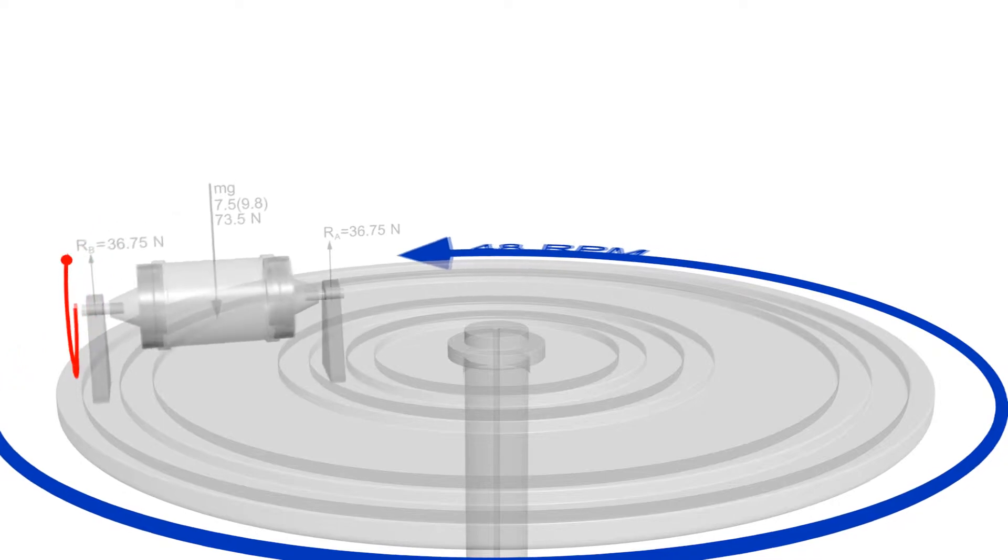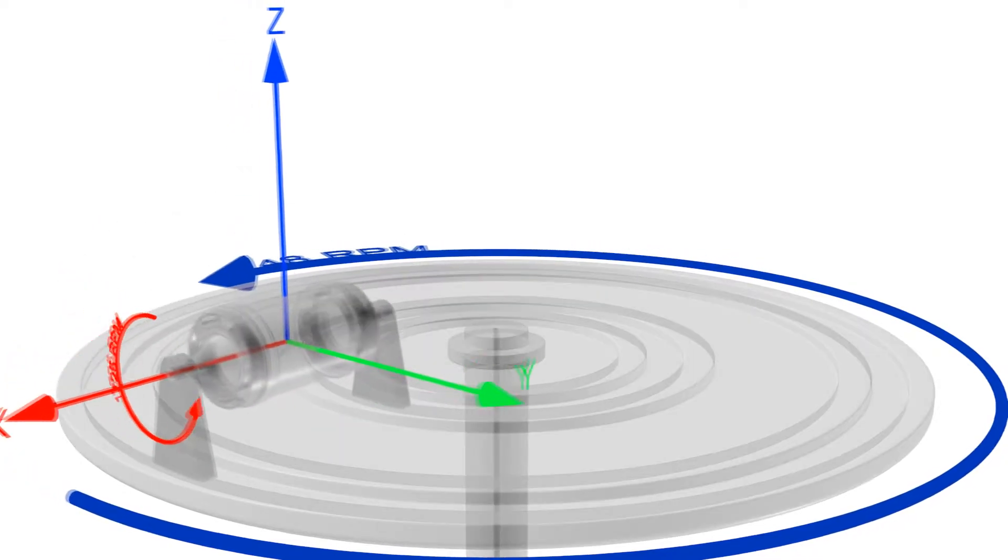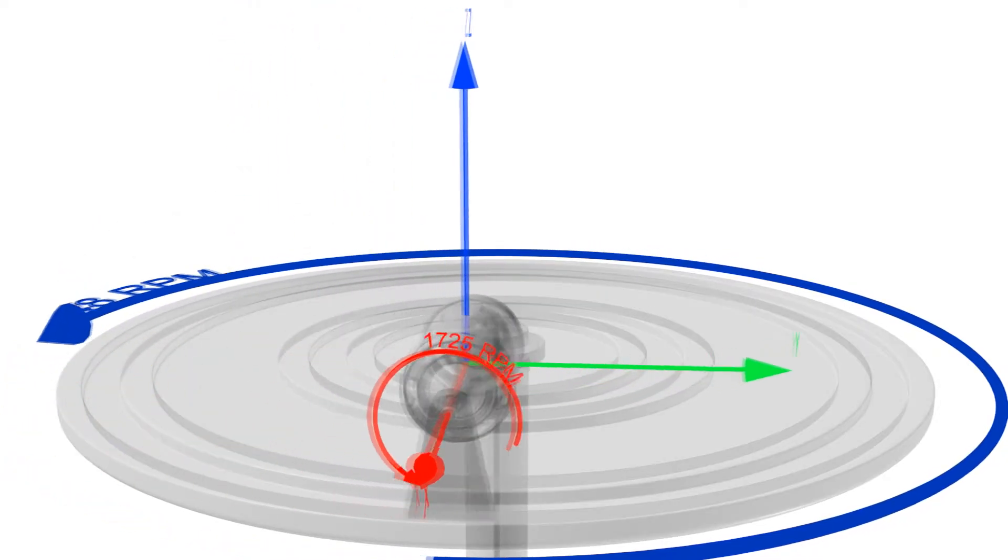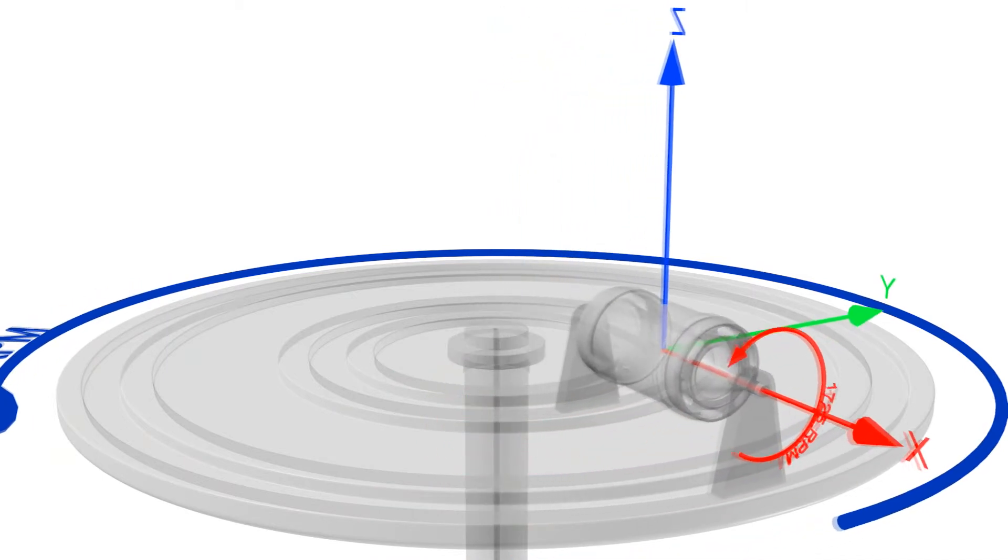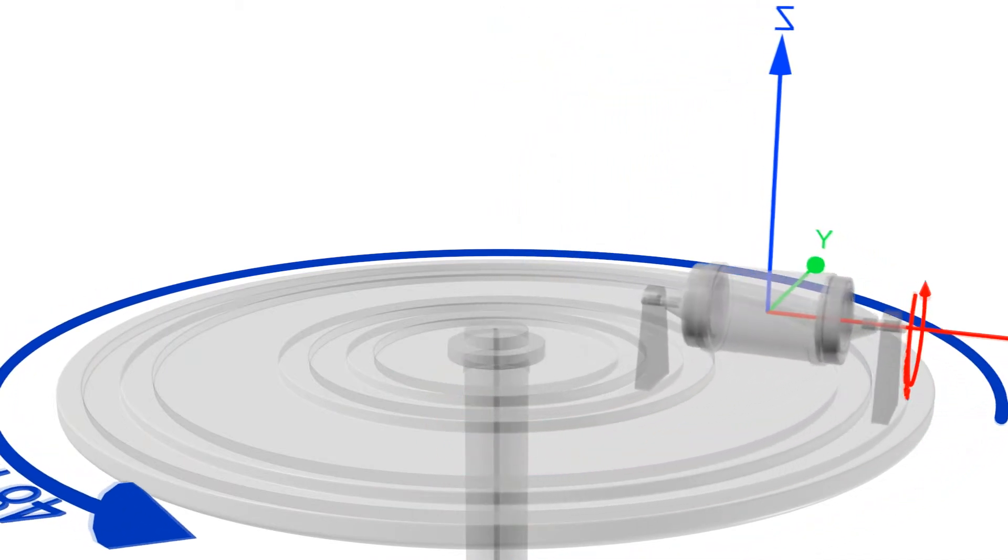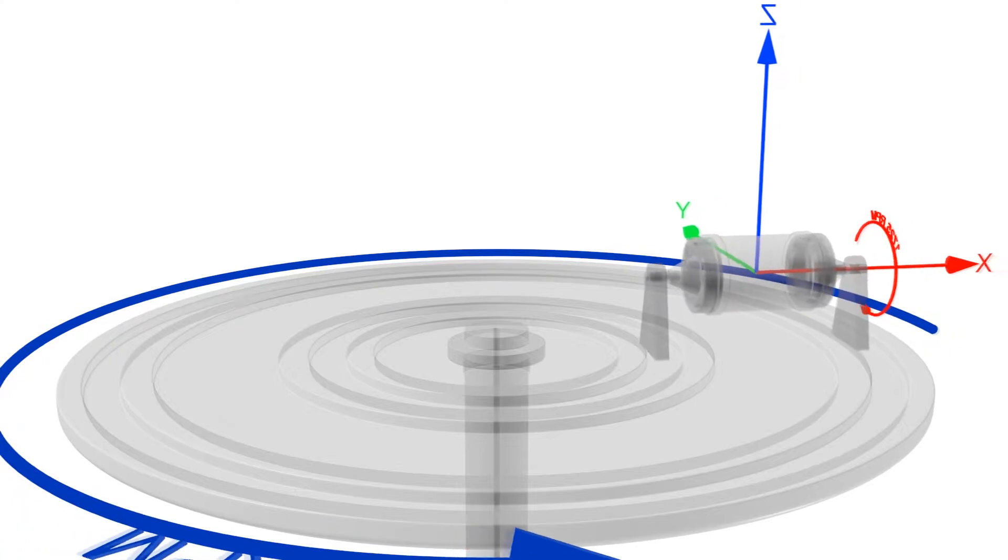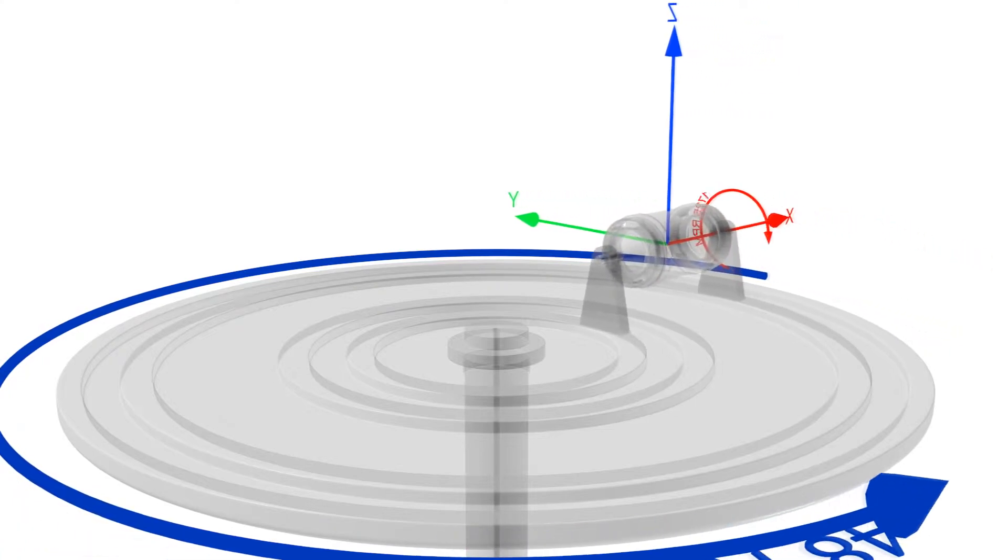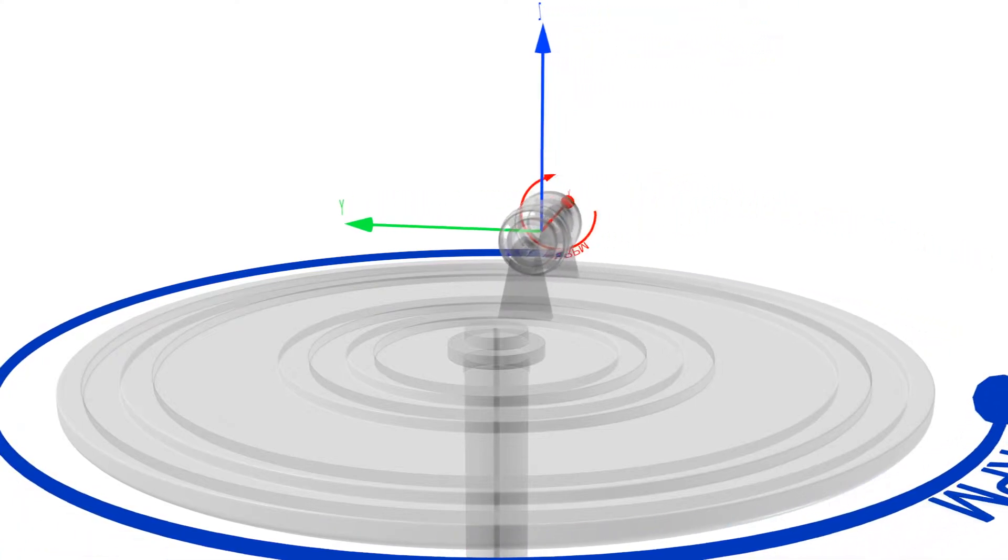As the reference frame itself is rotating, then the angular momentum of the motor will change over time. And this change in angular momentum will create an extra moment component that will act perpendicular to both the spinning axis and rotation axis.